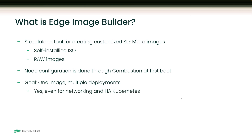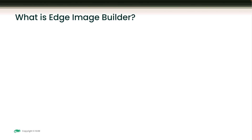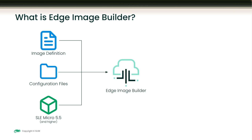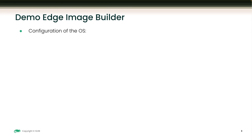The goal is to have one image for multiple deployments, and also for Kubernetes HA. We will have first of all an image definition in YAML where we define what we want the output to be. Then we will have some configuration files and a base image that should be SLE Micro 5.5 or higher. We combine these three using Edge Image Builder to get a single ready-to-deploy image.